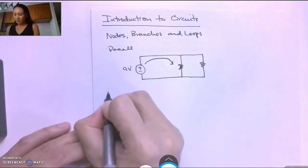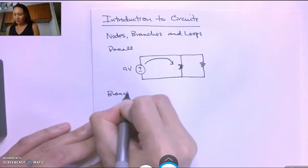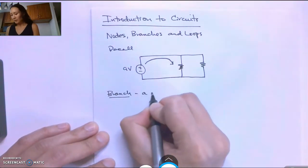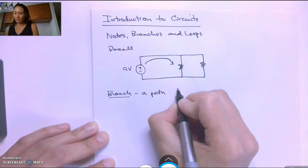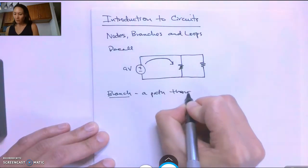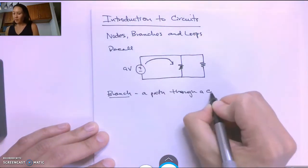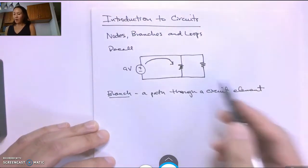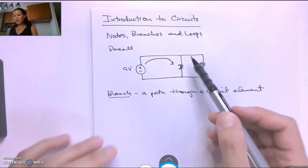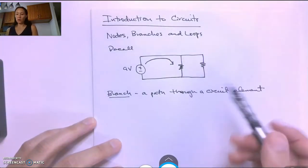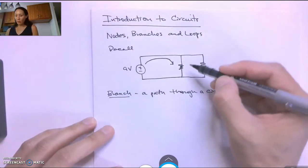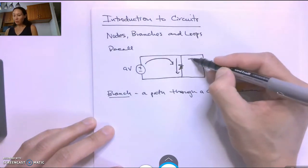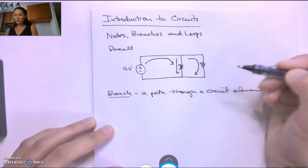So the first term I'm going to define for you is a branch. A branch is a path through a circuit element. For our resistive circuits here the circuit elements that we have are resistors. So we have a branch down this resistor and we have a second branch that goes through this resistor.